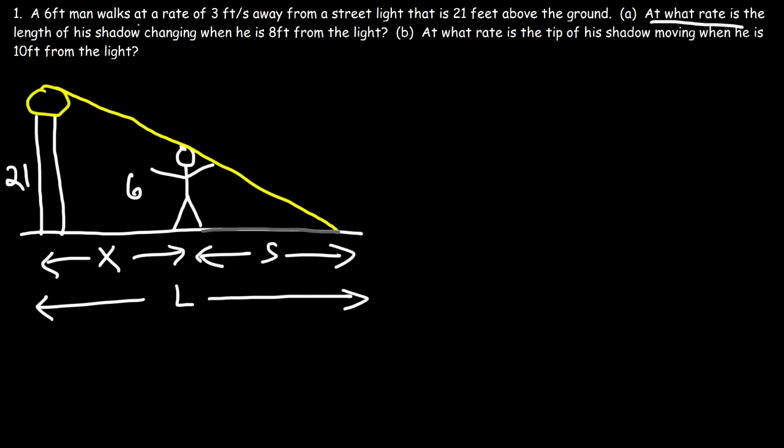At what rate is the length of his shadow changing when he is 8 feet from the light? And then part B, at what rate is the tip of his shadow moving when he is 10 feet from the light? So part A is asking for dS/dt. That's the rate at which the length of the shadow is changing. So that's how fast S is changing. Part B, at what rate is the tip of his shadow moving? When the tip of the shadow moves, in this case, that's going to be equal to the rate at which L is changing. So part B is really looking for dL/dt.